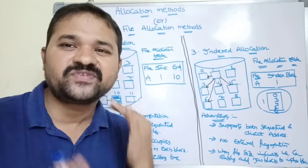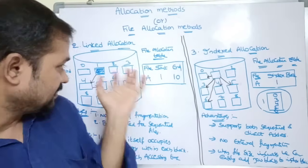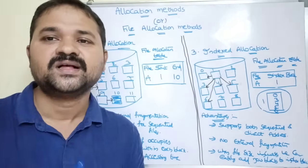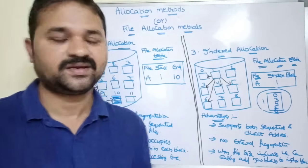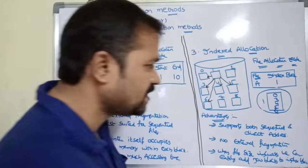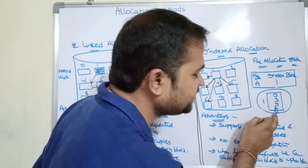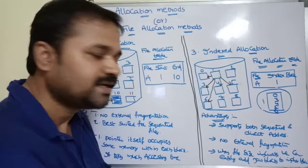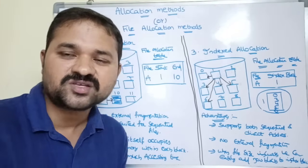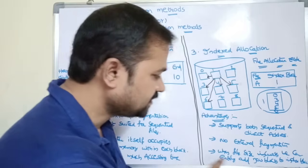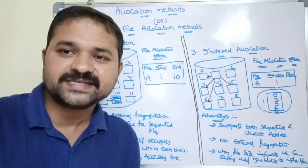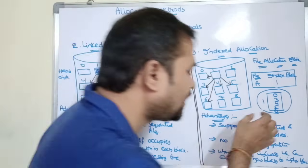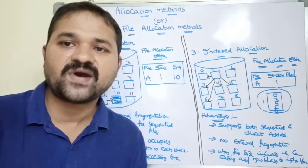Indexed allocation takes less memory than linked allocation. The advantages are: it supports both sequential and random file access — since the index block contains all block numbers, we can go directly from the index to block 4 or block 6, which is not possible with linked allocation. There is no external fragmentation because memory need not be allocated in contiguous blocks. Additionally, when the file size increases, we can easily add new block addresses to the index block.